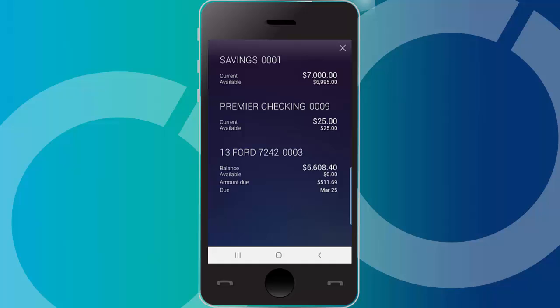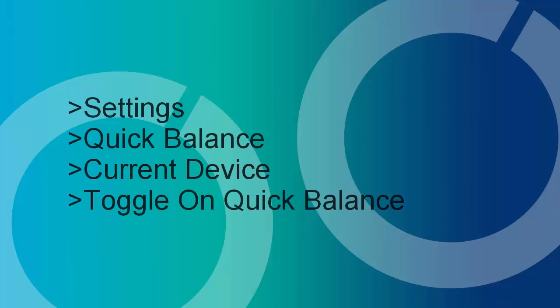Setting up Quick Balance is fast and easy on your Android or your iPhone. To enable Quick Balance, select Settings, Quick Balance, Current Device, and then toggle on or off the Quick Balance feature.